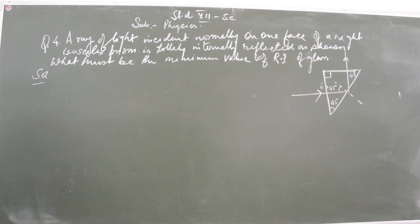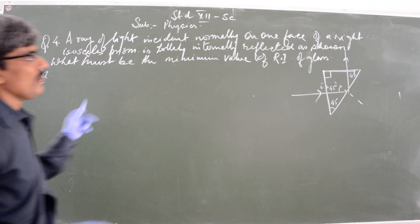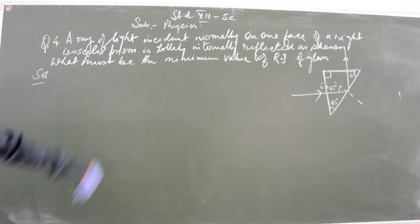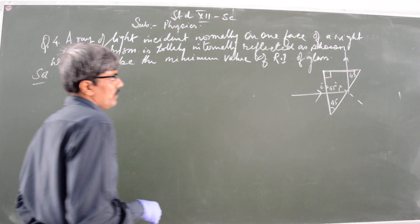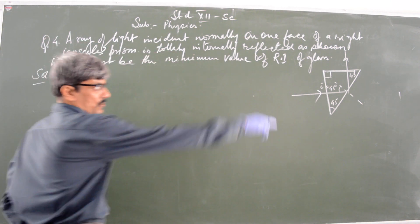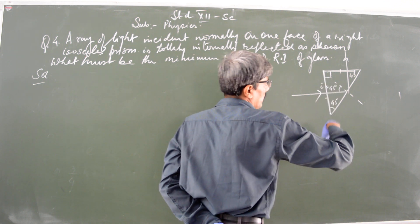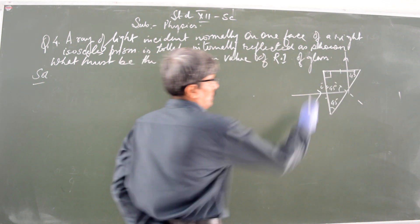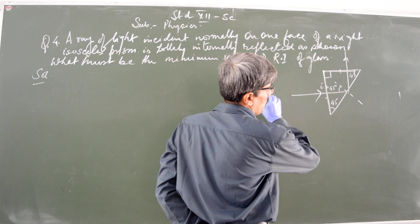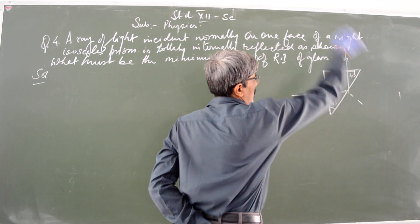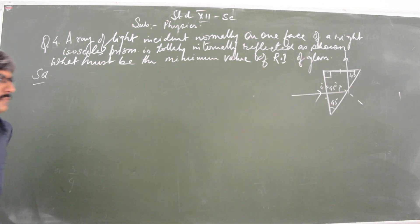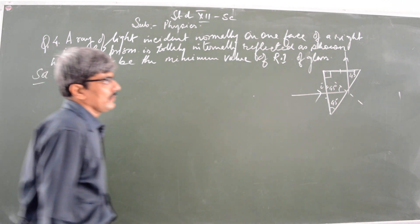A ray of light incident normally on one face of a right isosceles prism is totally internally reflected as shown. This is the diagram - it's a right isosceles prism with two sides equal, 45 degrees each, one angle 90 degrees. It's perpendicular to another face and it's getting totally turned by 90 degrees.